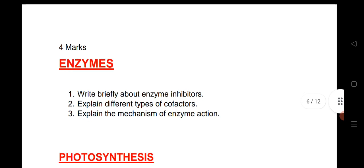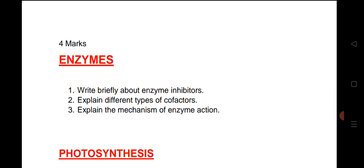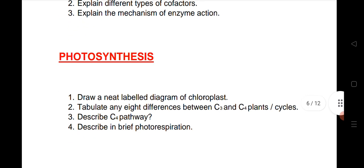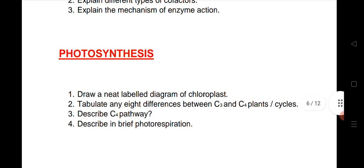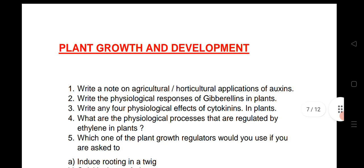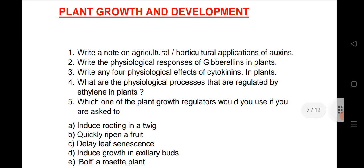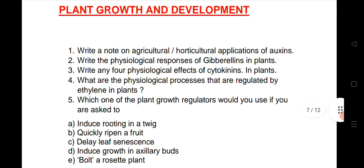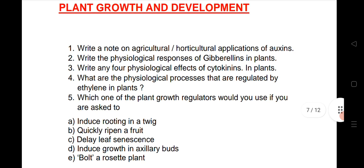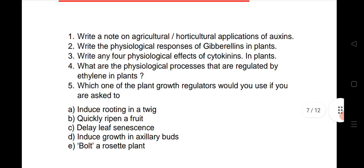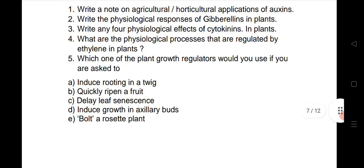Next is 4 marks questions from Enzymes. I have given only three questions: co-factors, inhibitors, and enzyme actions. Next Photosynthesis, we have listed 4 questions, very important questions from this chapter for 4 marks. Next, Plant Growth and Development, we have given 5 questions, very important: agriculture, horticulture, application of auxin, physiological responses of gibberellin, and these are very important questions.